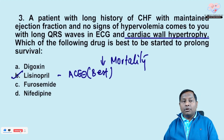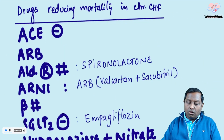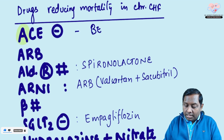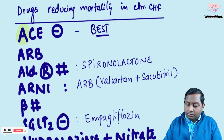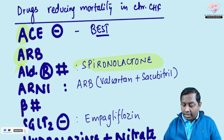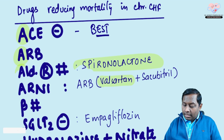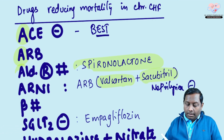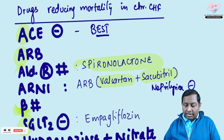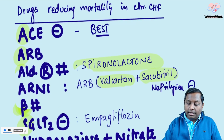The correct answer is lisinopril (ACE inhibitor). Among drugs decreasing mortality, remember the mnemonic ABS: ACE inhibitors, ARBs (sartans like telmisartan, losartan), and aldosterone receptor blockers (spironolactone, eplerenone). ARNI — a combination of ARB and sacubitril (a neprilysin inhibitor) — is also important. B stands for beta blockers, followed by SGLT2 inhibitors. The combination of hydralazine and nitrates also has a mortality-related benefit.